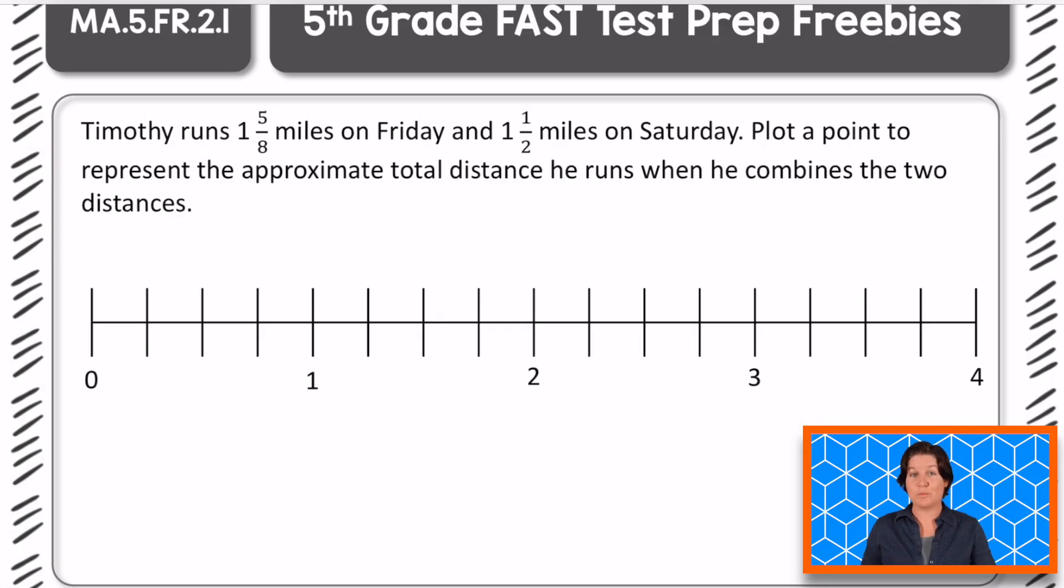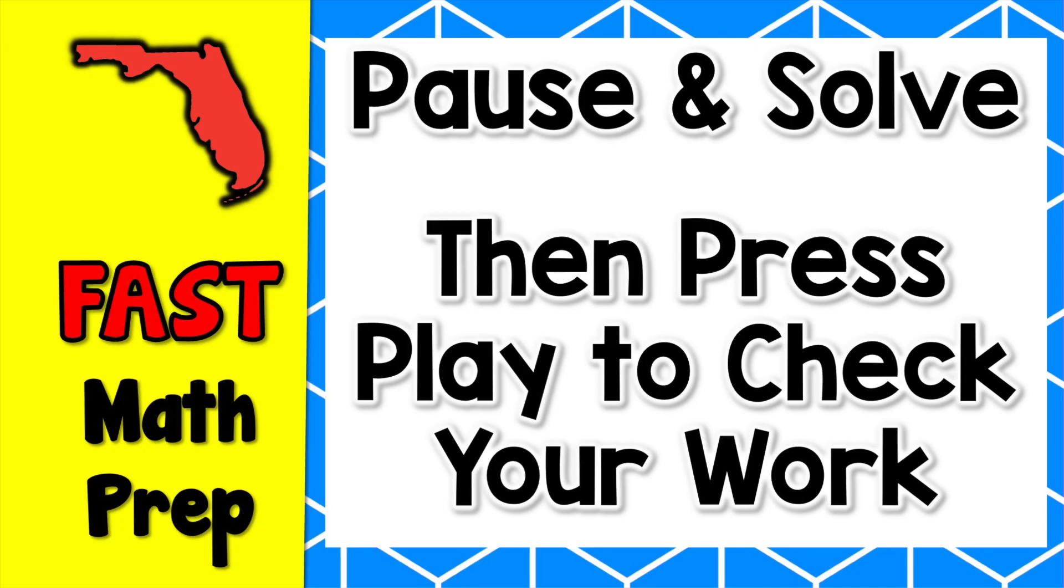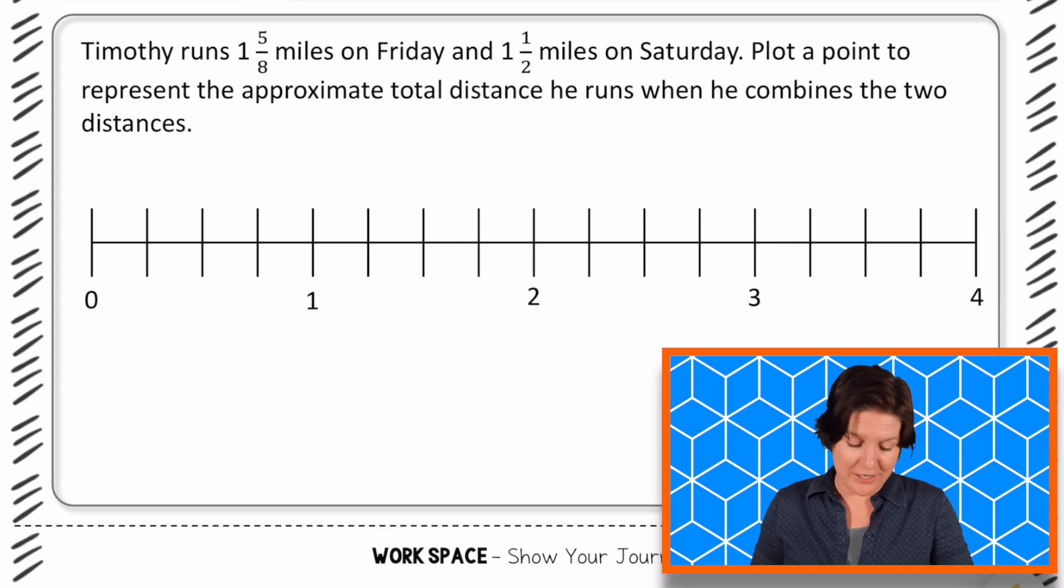Alright, fifth grade, here's your problem this week. So go ahead and pause the video and try this one on your own. Then when you're ready to continue, press play to check your work. Welcome back, fifth grade. So this one says that Timothy runs one and five eighths miles on Friday and one and a half miles on Saturday. Plot a point to represent the approximate total distance he runs when he combines the two distances.